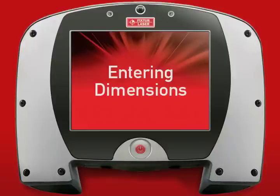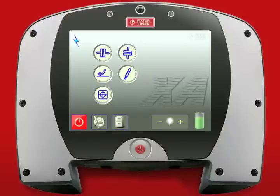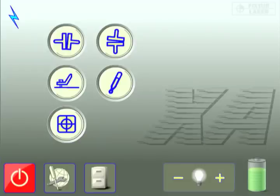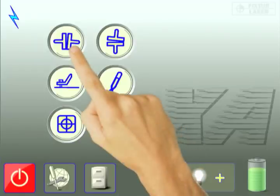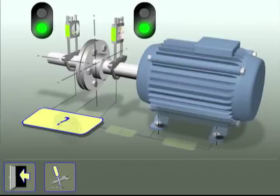Entering Dimensions. In another touch tip, we explored the settings available in the Horizontal Shaft Alignment application. In this touch tip, we'll show how to enter the dimensions necessary to perform a horizontal shaft alignment.